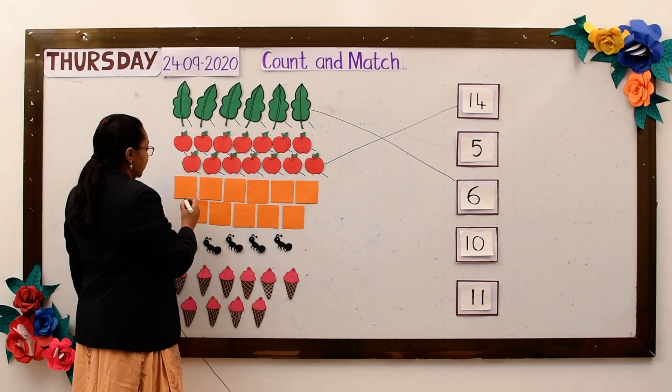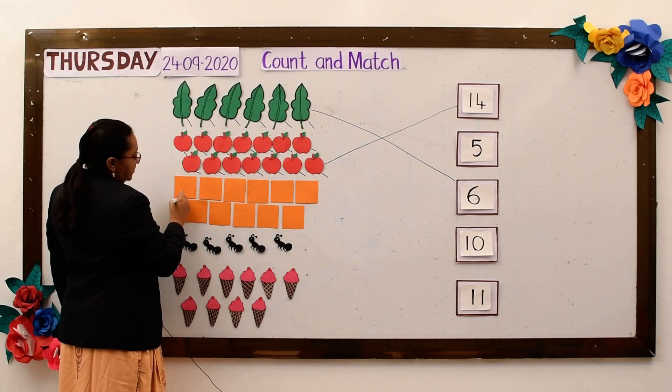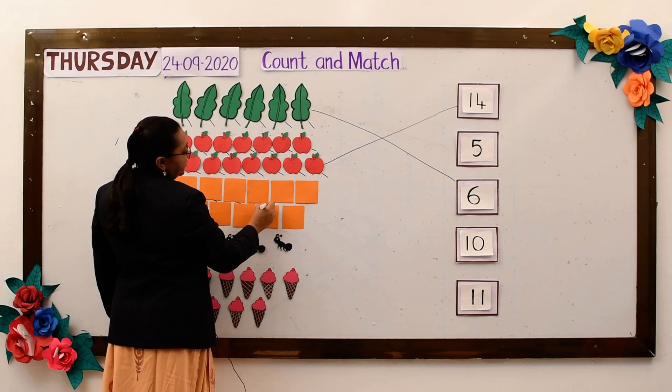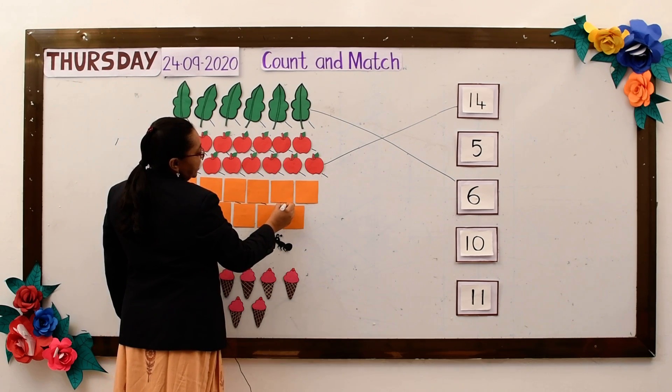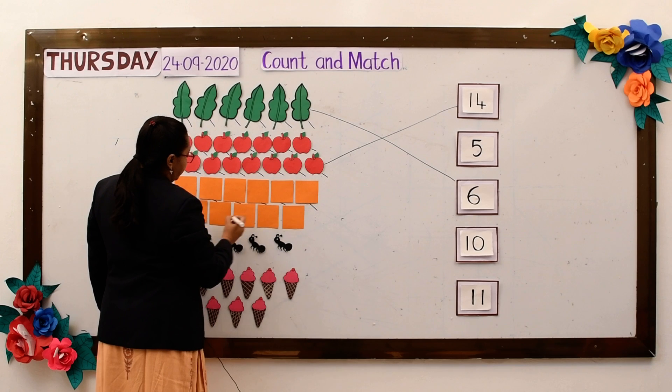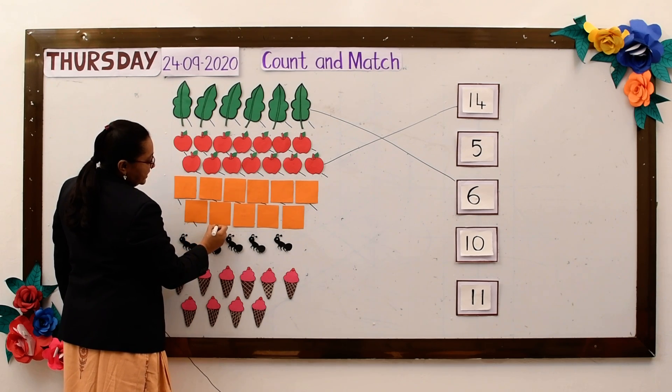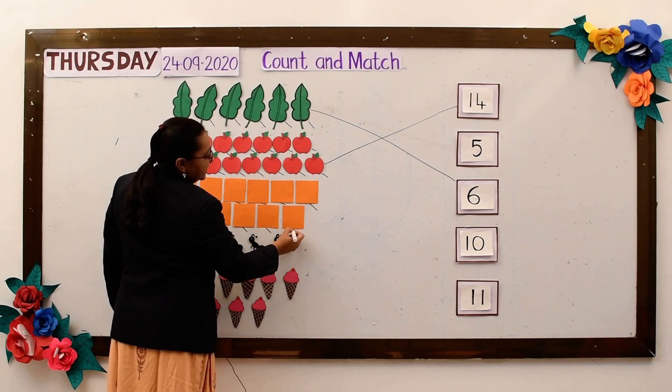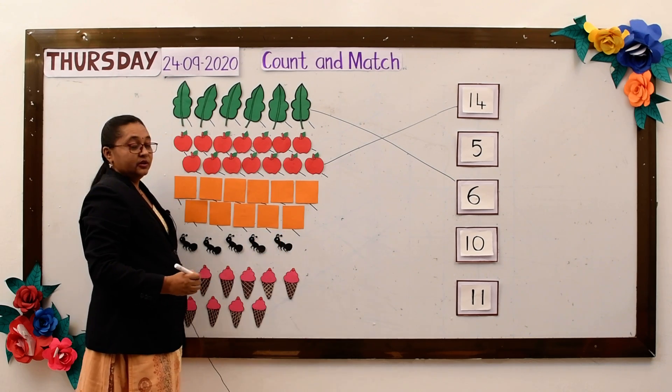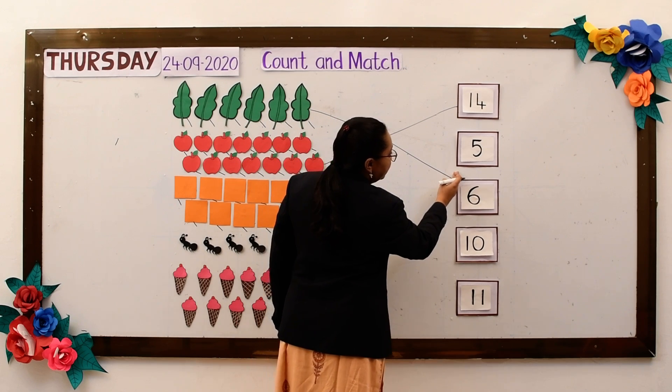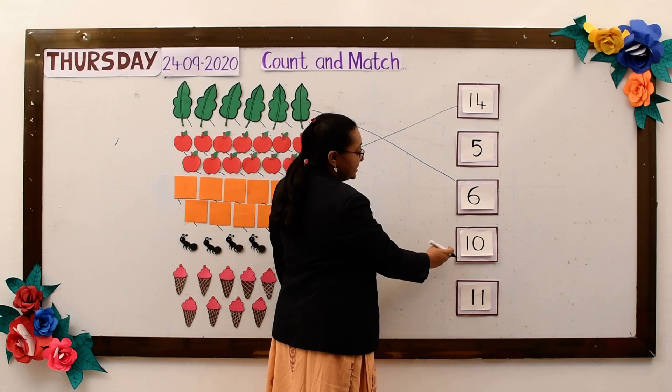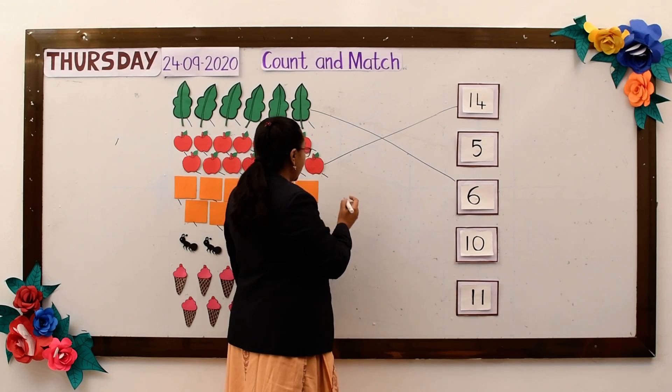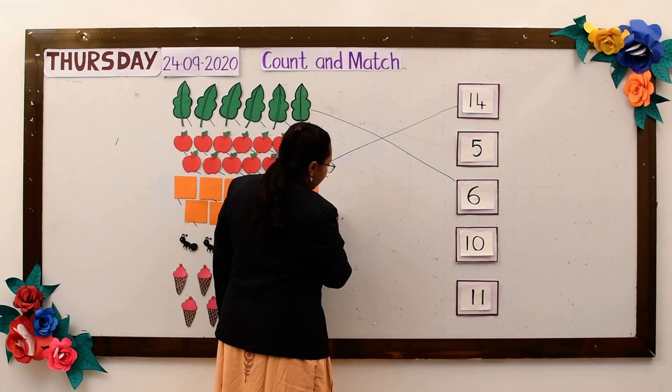Now our next object square. Let's count 1, 2, 3, 4, 5, 6, 7, 8, 9, 10, 11. So where is my number 11? Is this number 11? No. Is this number 11? No. Yes, this is number 11. So I will match it to the number 11.